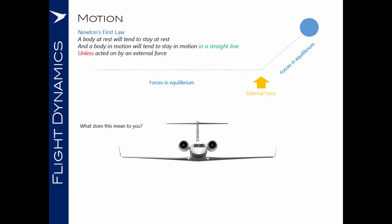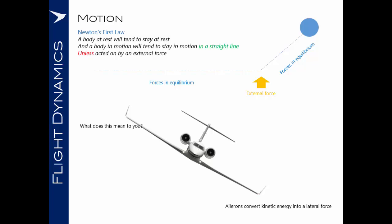Why is this important to us? Well, for us in an airplane, we try to generate external forces in order to generate a movement with the aircraft. In this case, where we've rolled an airplane, we've used the ailerons to convert kinetic energy into a lateral force, which has enabled us to move the airplane in the roll dimension. The airplane will not move unless we've generated that force.